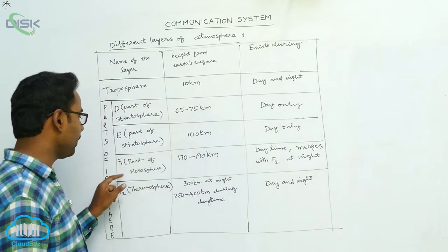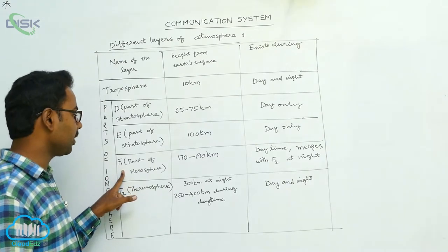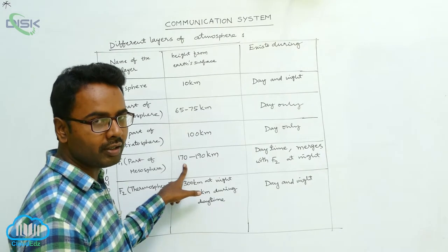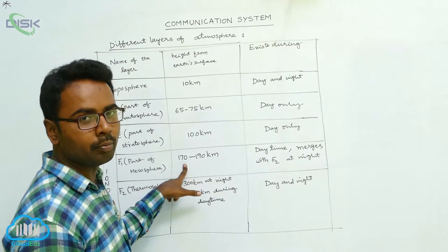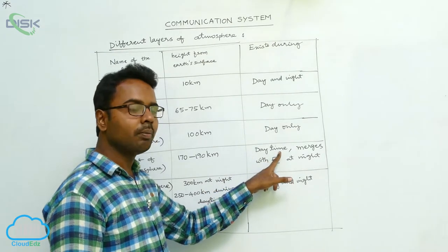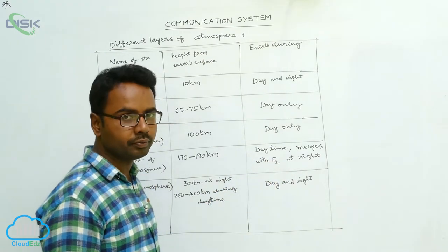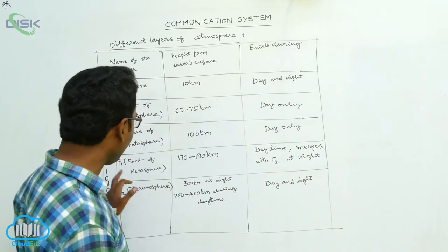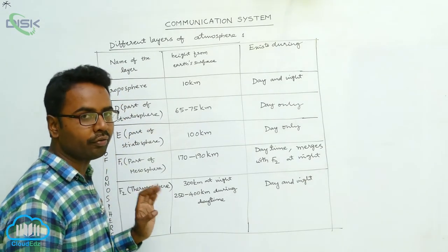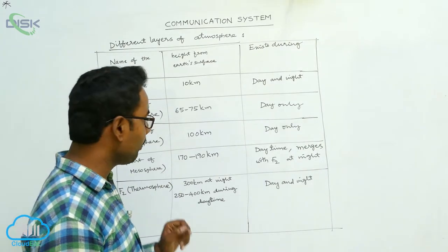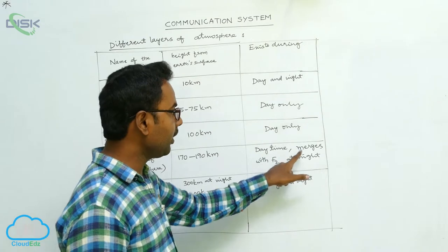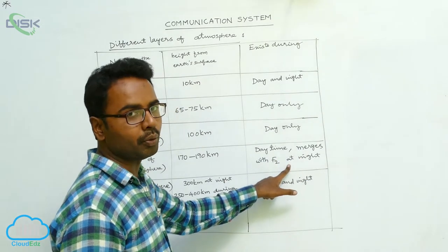F1 is the part of mesosphere. It is at a height of approximately 170 km to 190 km from the Earth's surface. F1 exists during daytime, but at night time it merges with F2. During daytime F1 and F2 exist separately, but during night time only F2 is there — F1 merges into F2.